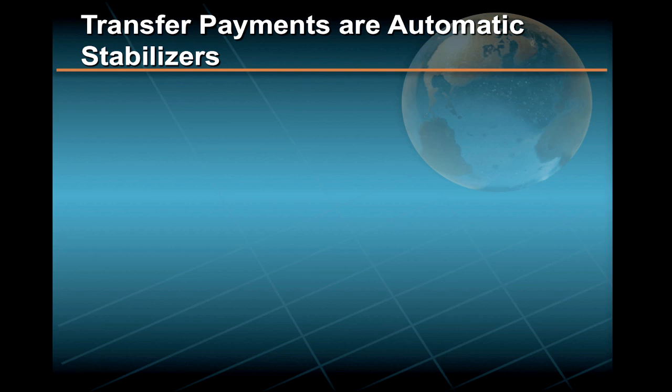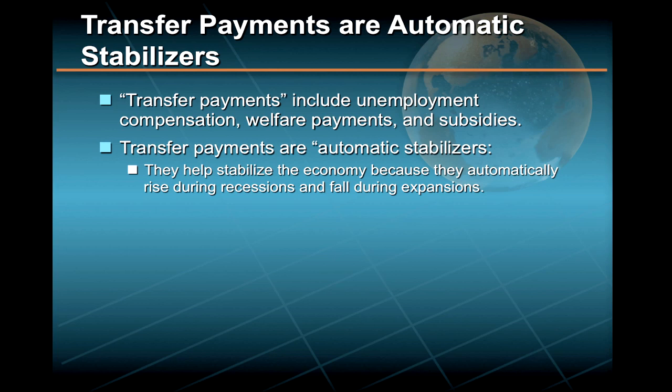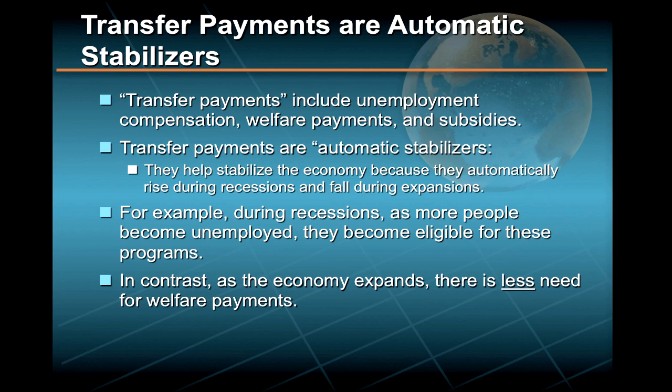In addition to discretionary changes in government spending and taxes, there are also important non-discretionary government expenditures that act as built-in macroeconomic stabilizers. These non-discretionary expenditures are called transfer payments, and they include such things as unemployment compensation to workers, welfare payments, and subsidies to farmers. These transfer payments help stabilize the macroeconomy because they automatically rise during recessions and fall during expansions — as more people become unemployed during recessions they become eligible for these programs, and as the economy expands there is less need for them.